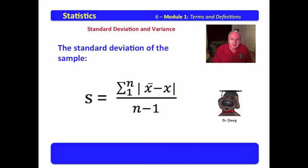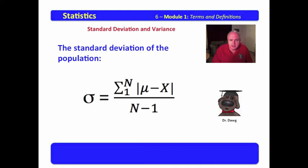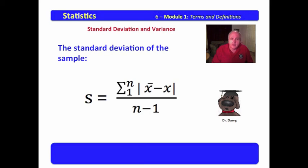The standard deviation of the sample is a very similar formula. It is S equals the sum of all values from the first to the last, where the value is defined to be the individual datum subtracted from the mean. We take the absolute value to make it positive and divide by n minus 1. The only difference is that in the population we use capital N and capital X, and in the sample we use lowercase n and lowercase x.